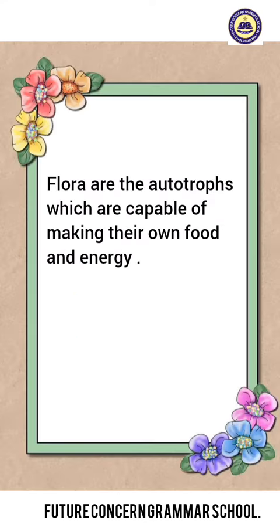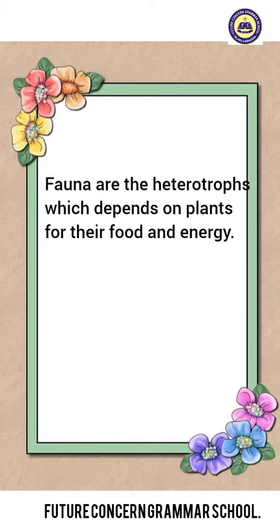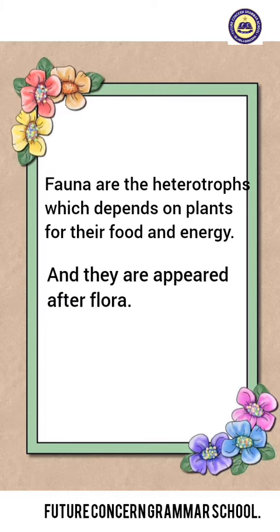Flora are the autotrophs which are capable of making their own food and energy, and they are the first form of life to appear on the earth. Fauna are the heterotrophs which depend on plants for their food and energy, and they appeared after flora.